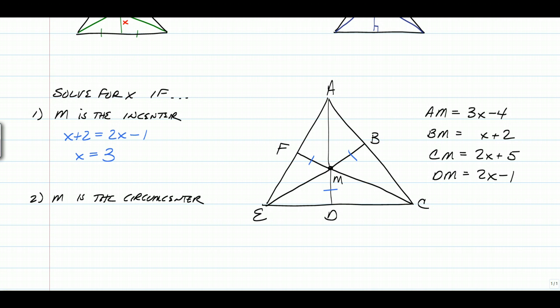For the other one, number two, if M is a circumcenter, circumcenters are equidistant from the three vertices of a triangle. So in this case, we have AM and CM, so we're just going to set 3X minus 4 equal to 2X plus 5, and you'll get X is equal to 9.